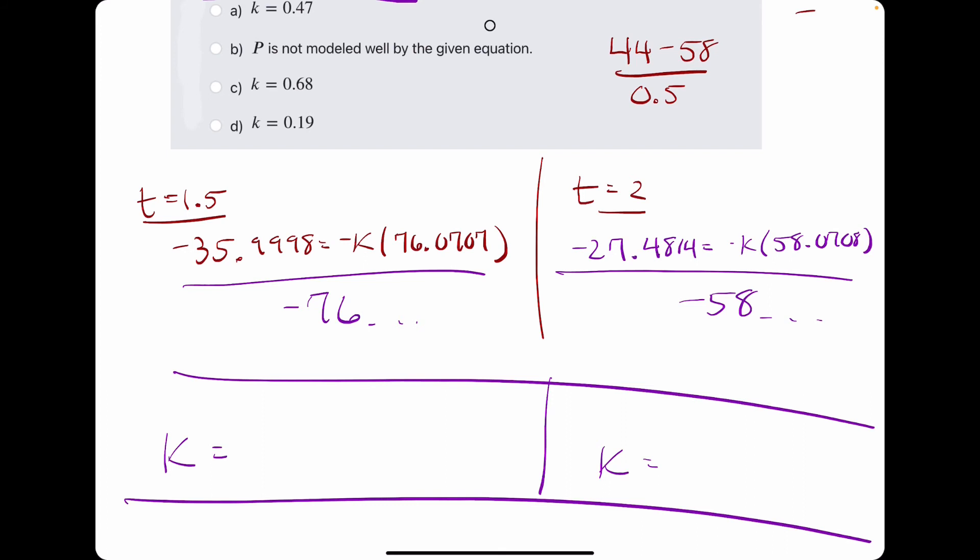On the left side, we have 35.9998 divided by 76.0707, and we get 0.4732. And again, the negative divided by negative cancels to become positive. On the right side, we have 27.4814 divided by 58.0708, and we get 0.4732.